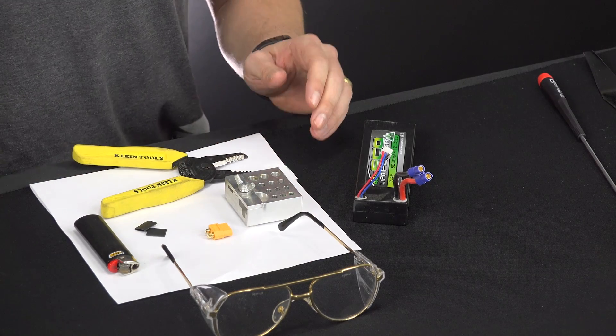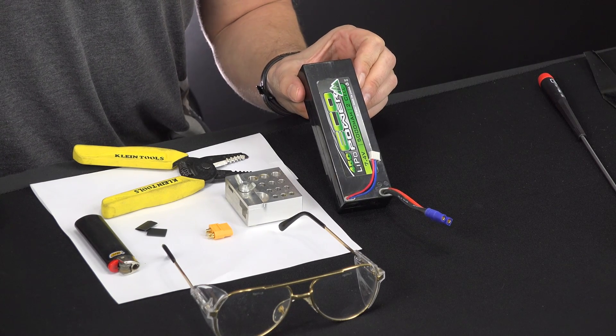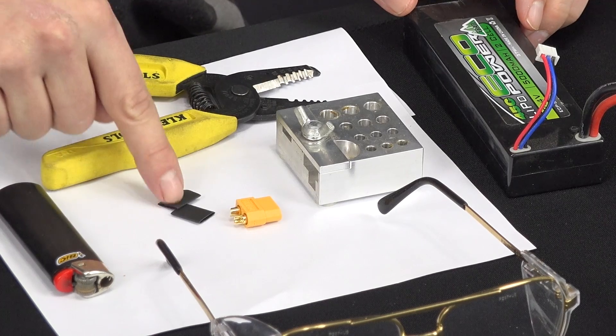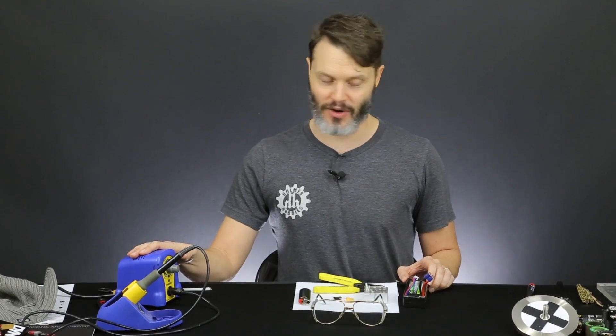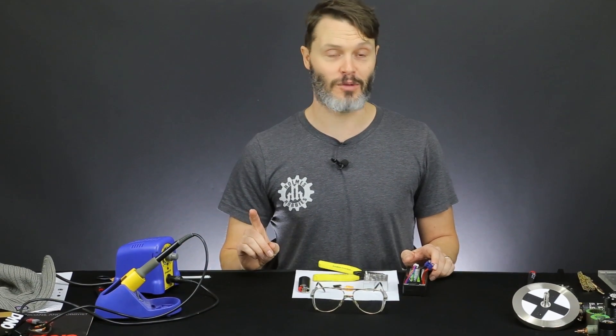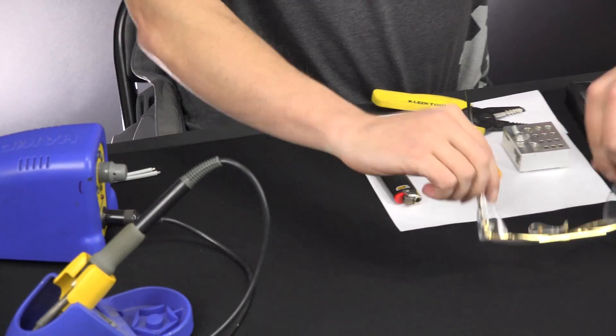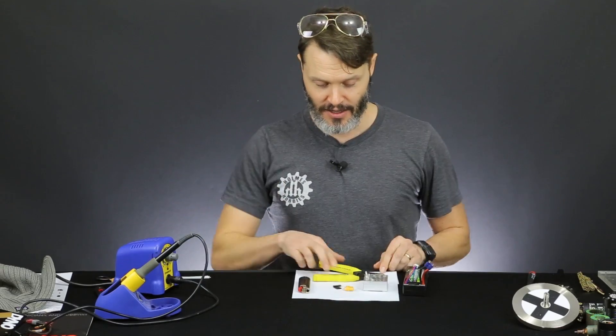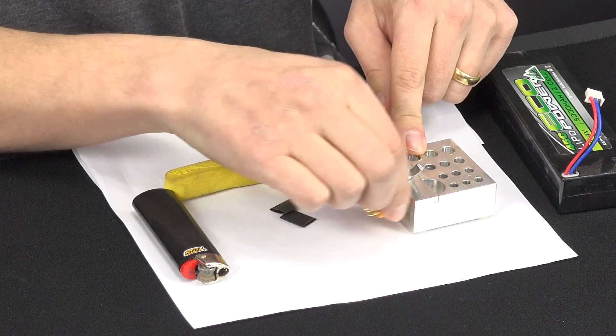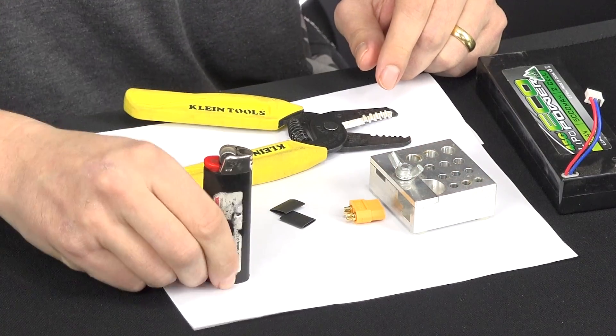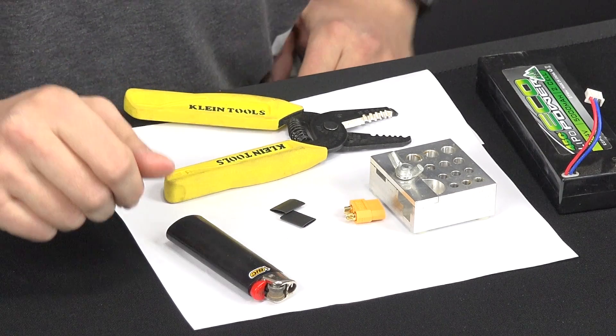So we are going to first cover the items that we need for soldering. Obviously we need the battery that we're going to be switching the connector on. We will need the connector along with the heat shrink. We also need a soldering iron for the soldering job, and we will need solder. Definitely safety glasses, probably wire cutters/strippers, this little jig that holds our battery connector, and then finally something to shrink our heat shrink which would be the lighter in this case or a heat gun.